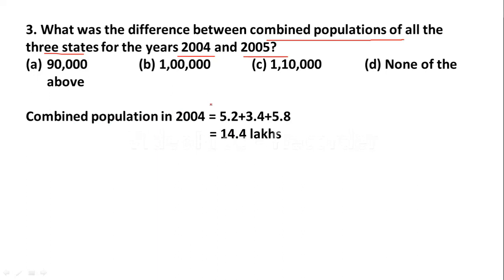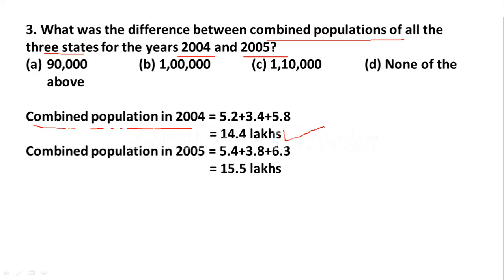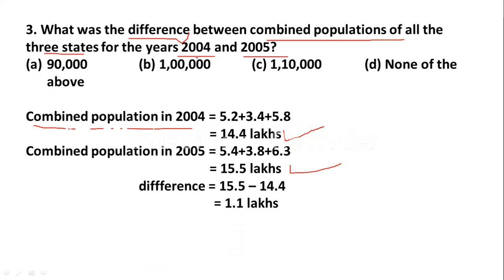Combined population in 2004: State A 5.2, State B 3.4, State C 5.8 — total 14.4 lakhs. Combined population in 2005: State A 5.4, State B 3.8, State C 6.3 — total 15.5 lakhs. The difference is 15.5 − 14.4 = 1.1 lakhs, which equals 1 lakh 10,000. Option C is the correct answer.